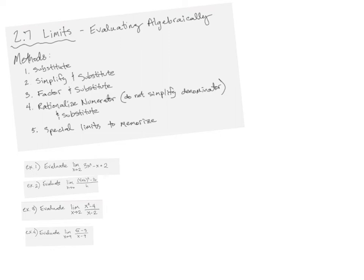Hey guys, what's happening? I'm going to show you today how to evaluate limits algebraically using a couple methods. The first thing that you should always do when you see a limit is substitute — that's the first method we're going to talk about. And then if that doesn't work, if you get something that's undefined, then we're going to go to other options: maybe simplify and substitute, factor and substitute, rationalize a numerator and substitute, or look at it graphically — almost like your trig identities.